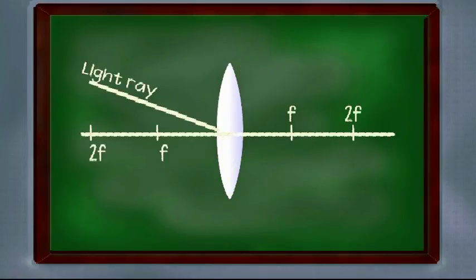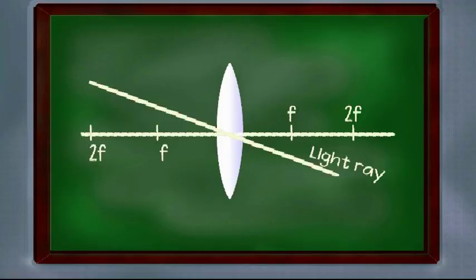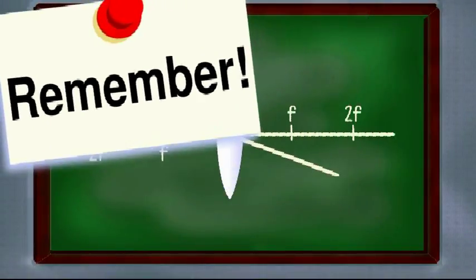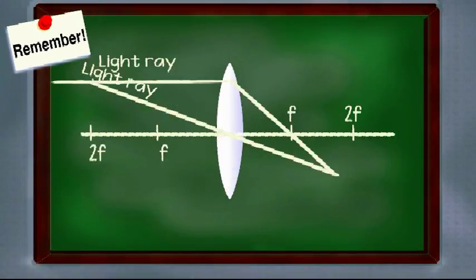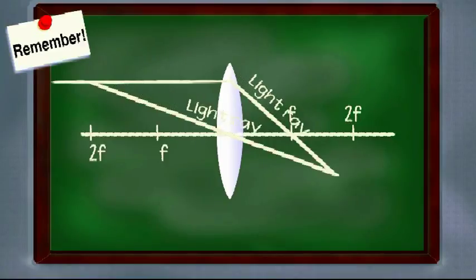When the light ray will pass through the center of lens, it will pass as it is. It will not deflect, it will not converge, it will pass as it is. And these two basics will help you throughout the ray diagram.